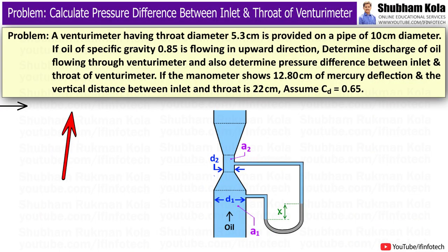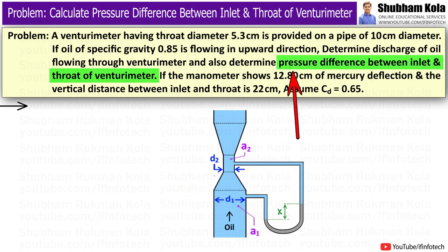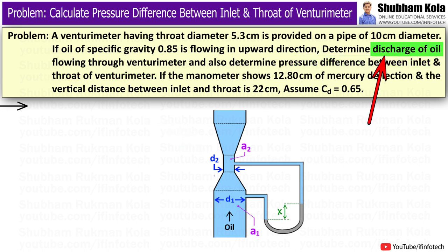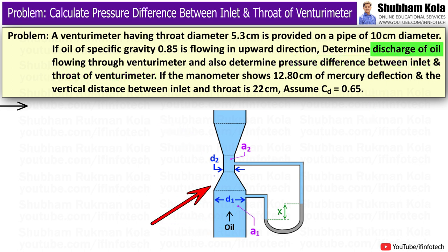In this video, we are going to solve a numerical based on a Venturimeter, where we will calculate the pressure difference between the inlet and throat of a vertical Venturimeter, and also we will calculate the discharge of oil flowing through the Venturimeter.